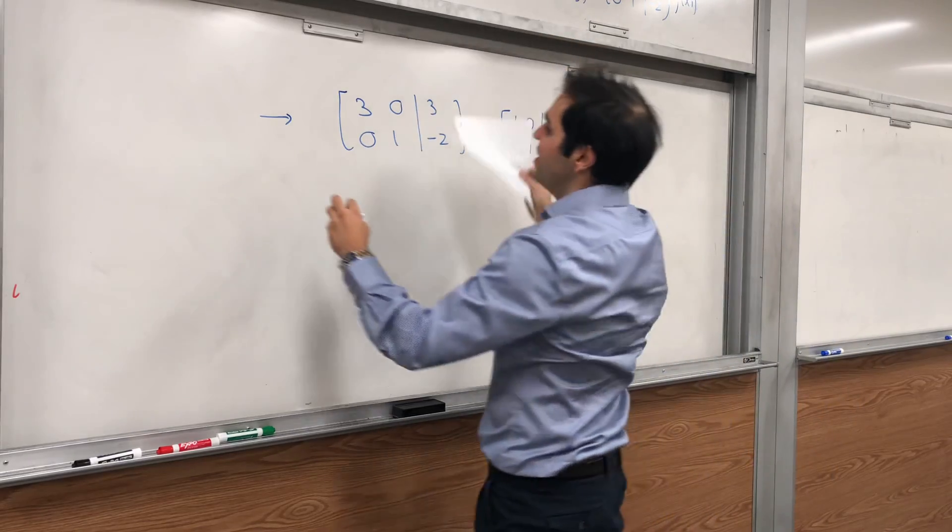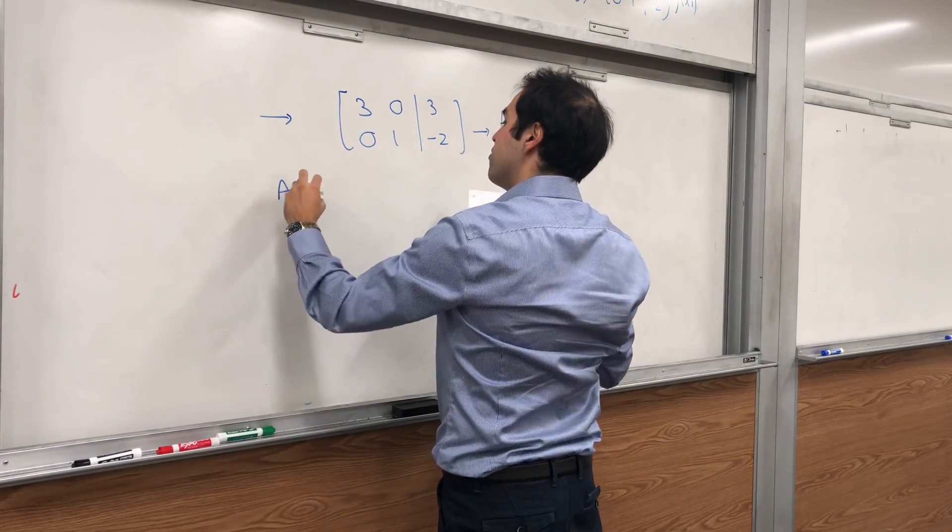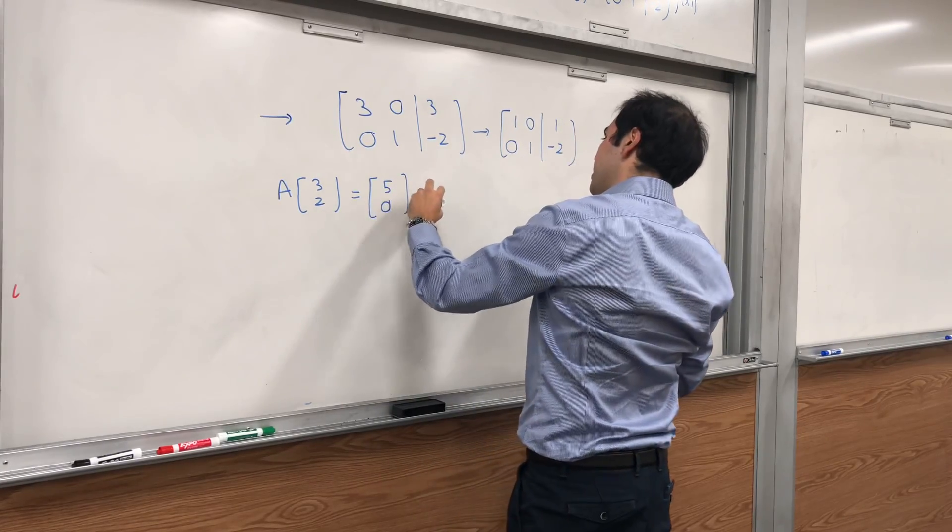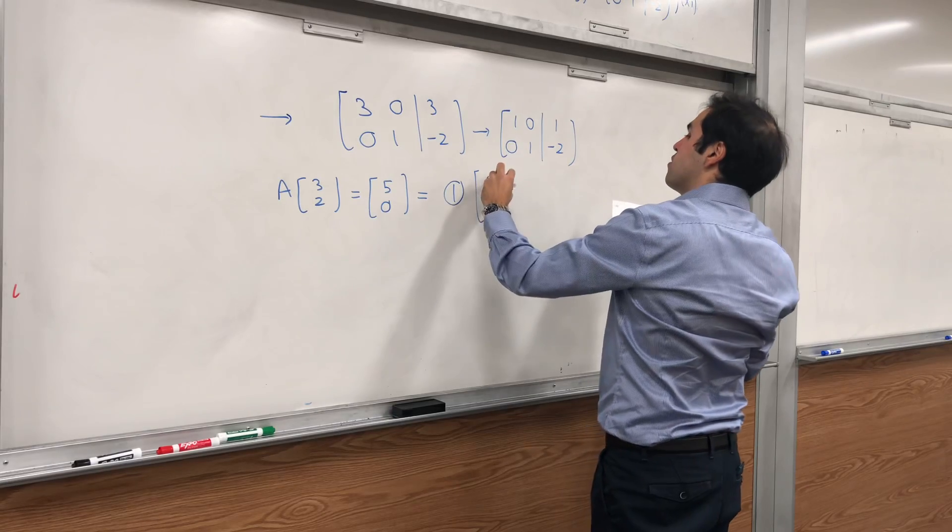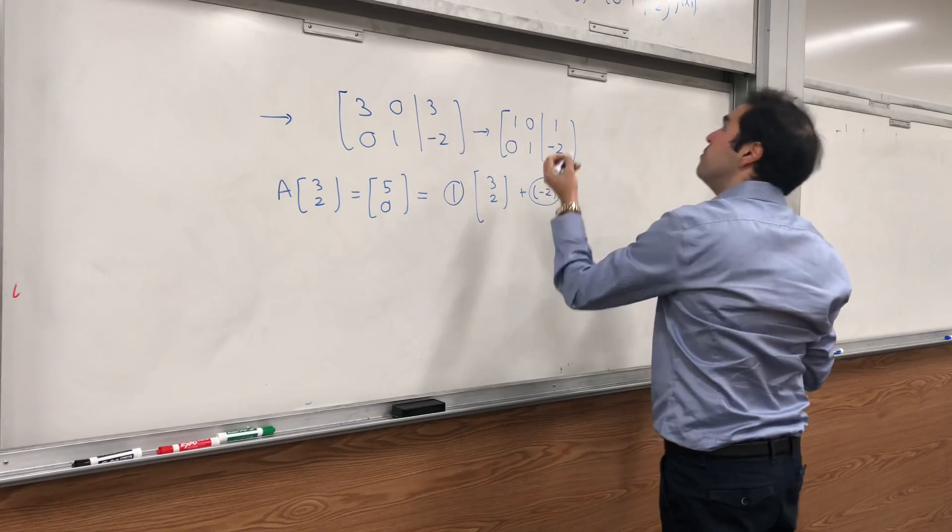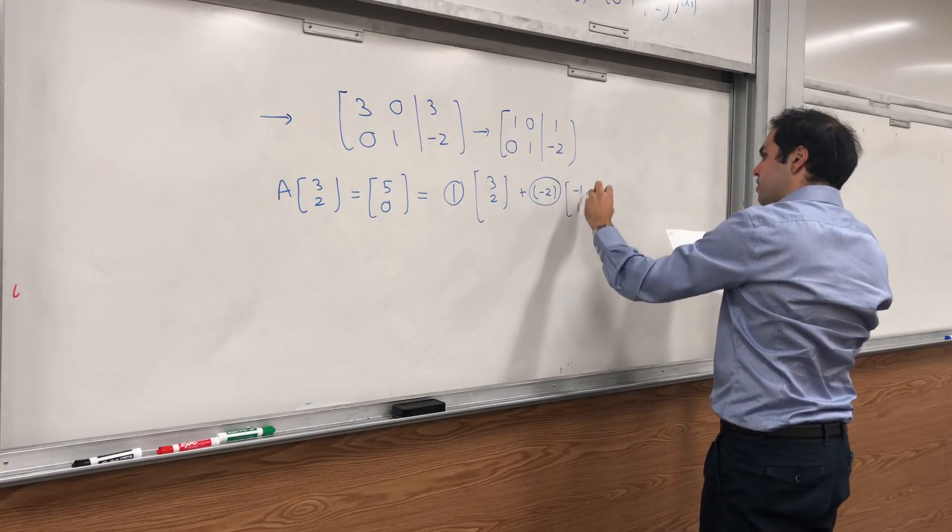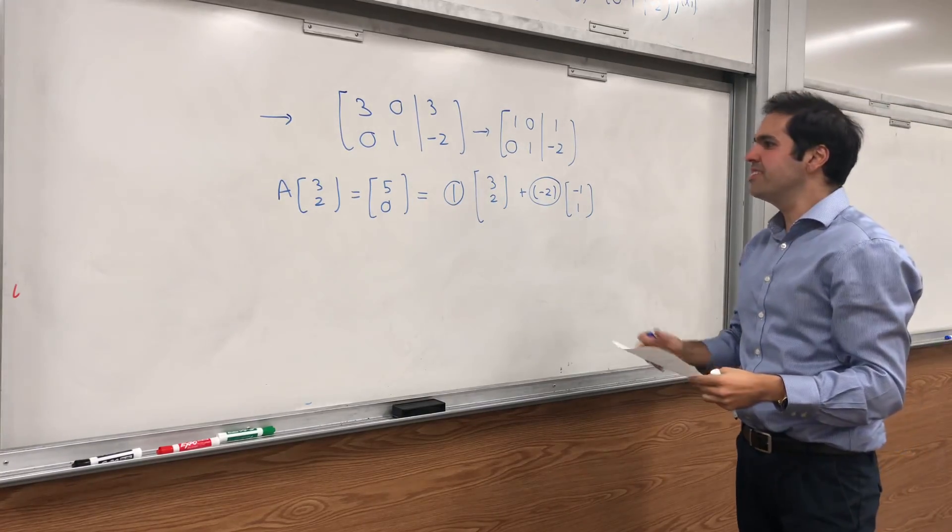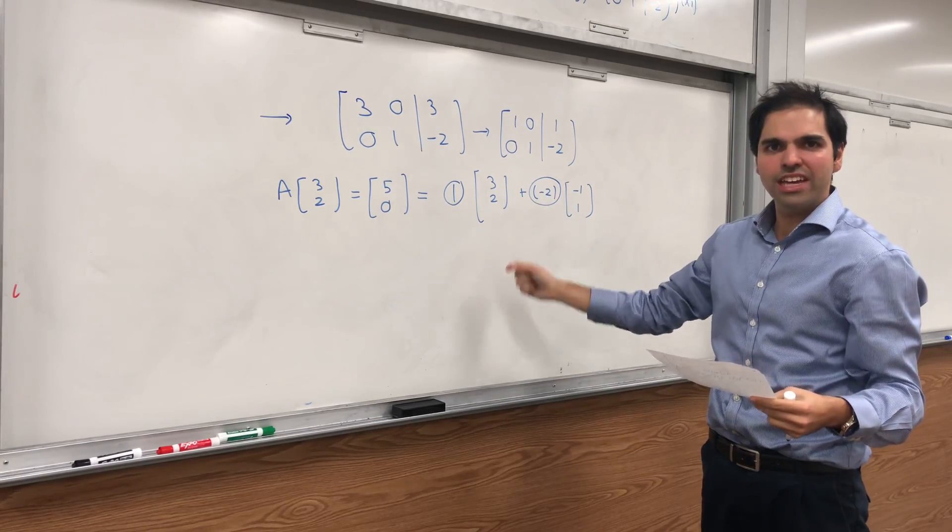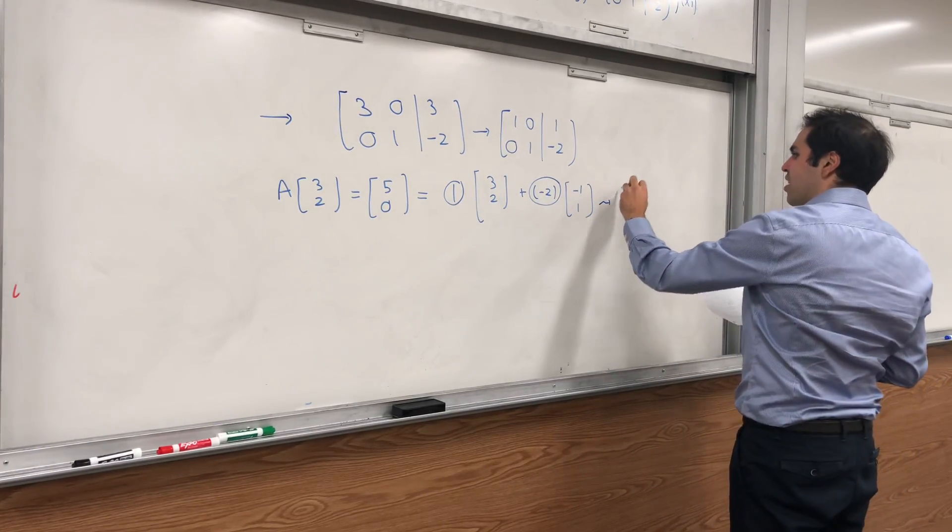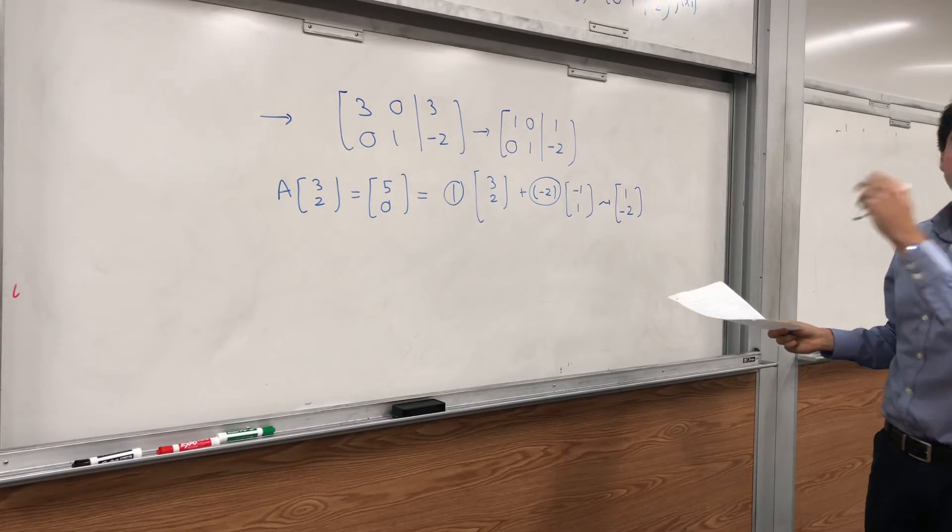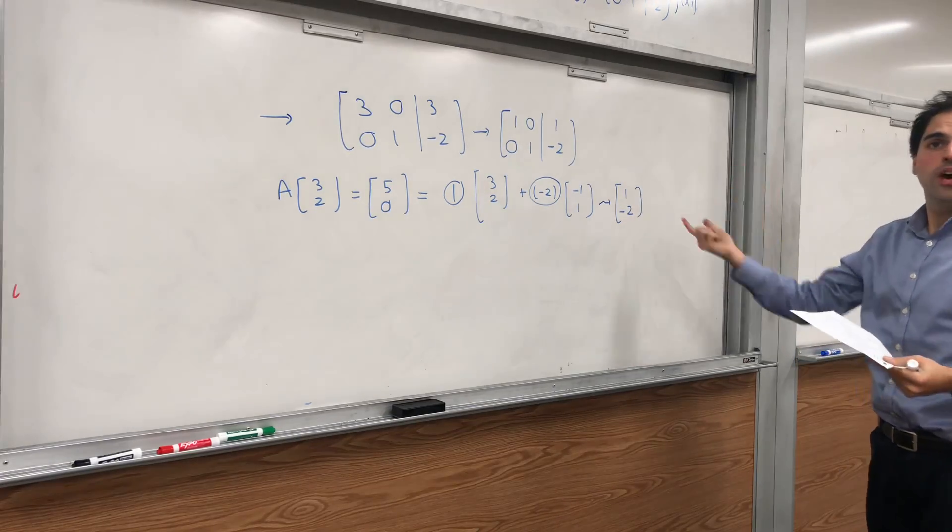What is that telling us? It tells us that A(3, 2), which is (5, 0), equals 1 times (3, 2) plus -2 times (-1, 1). And just like for matrices of linear transformations, all you do, you take those two coefficients together and put them in a column vector. So in other words, we know that the first column of the B-matrix of A is [1; -2].